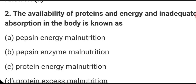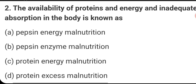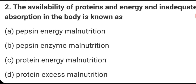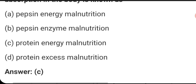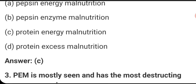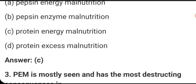The unavailability of proteins and energy and inadequate adjustments in the body is known as what? That is called protein energy malnutrition only — PEM. The right answer is C.